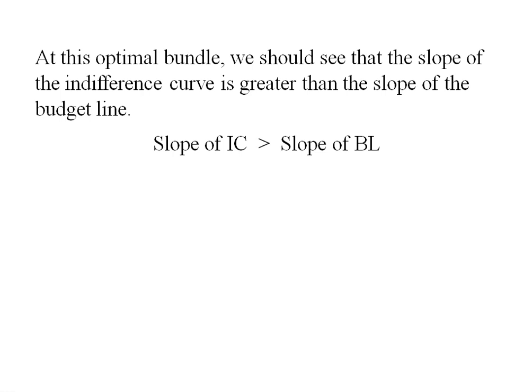At the optimal bundle, we should verify that the slope of the indifference curve is greater than the slope of the budget line. The slope of the indifference curve is (C + 10) / F, and the slope of the budget line is 1/2. Plugging in C = 0 and F = 10: 10/10 = 1, which is greater than 1/2. Yes, the slope of the indifference curve exceeds the slope of the budget line at our corner solution.